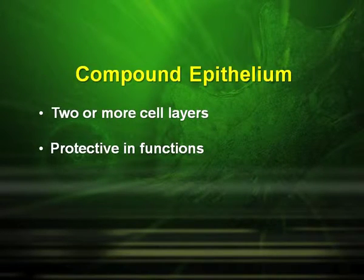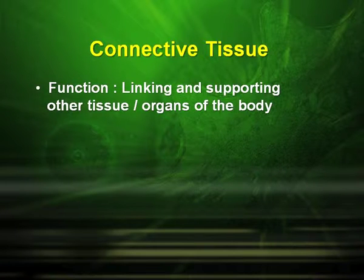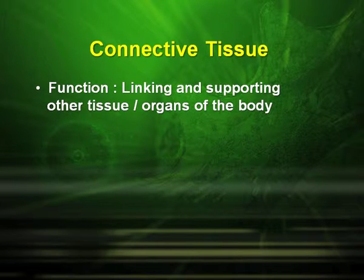Compound epithelium tissue is made up of two or more cell layers and is protective in function. The next type of animal tissue is the connective tissue. Its function is linking and supporting other tissues and organs of the body. There are three types of connective tissues: loose connective tissues, dense connective tissues, and specialized connective tissues.